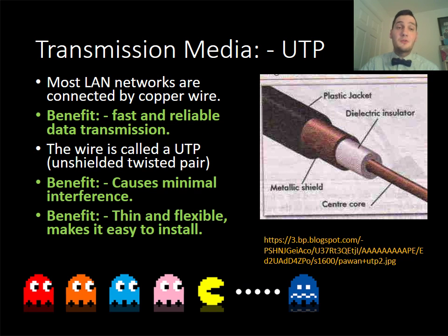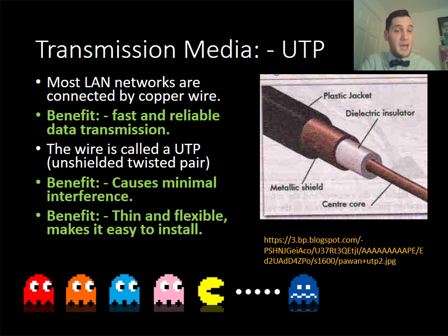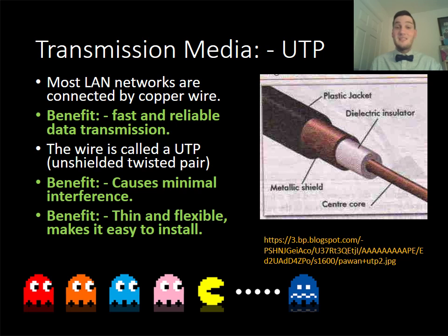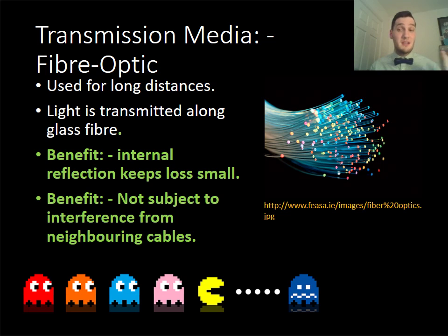Moving on to transmission media. Most local area networks use copper wire because it's fast and reliable, and computers use binary — ones and zeros — which is powered by electronics. This type of wire is called unshielded twisted pair. We use it because there is minimal interference and it's flexible — you can move the cable around buildings very easily. However, unshielded twisted pair can only travel so far — maybe 50 meters — before the signal starts to drop.